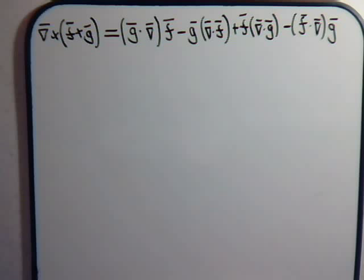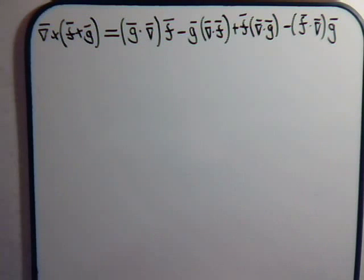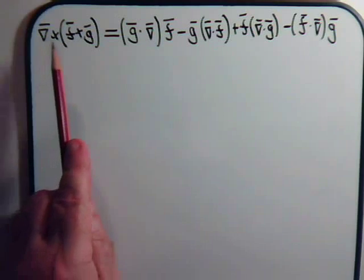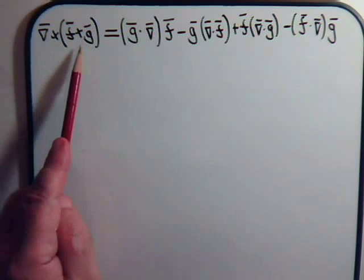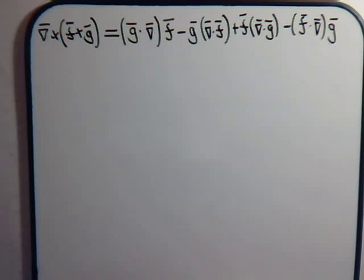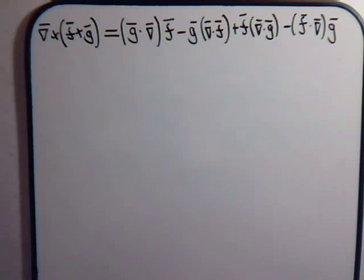In this video we are going to tackle our fourth example of a vector identity problem that involves the del operator. Specifically, we want to do this vector identity: when you're taking the triple or double cross product of two vectors and then taking that cross product with the del operator, you're supposed to get this rather lengthy expression here.